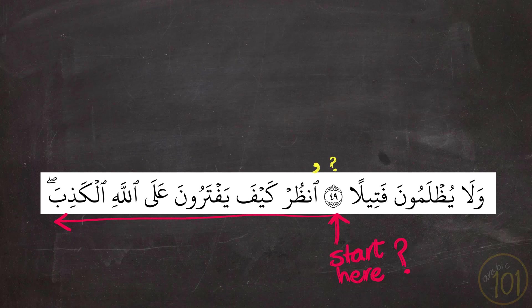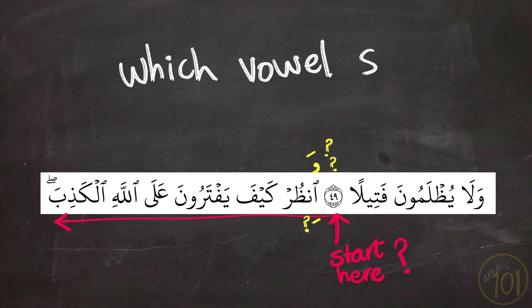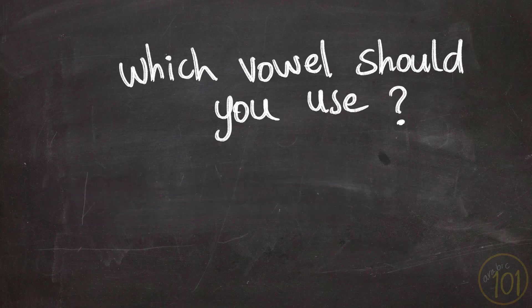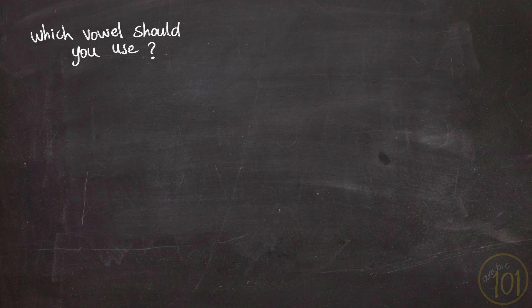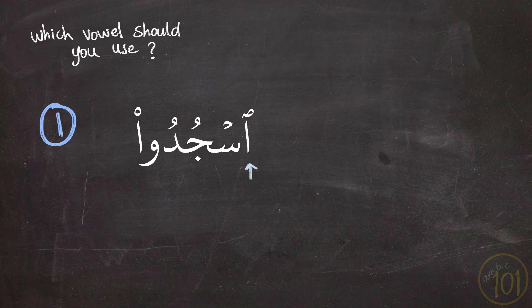Are you going to put Dhamma on top and say 'Unzur'? Or Fathah and say 'Anzur'? Or Kasra and say 'Inzur'? How can you know which one is correct? The key to answer this question is the third letter of the word. If the third letter has Dhamma on top, then Hamzat Wasl will also have Dhamma.